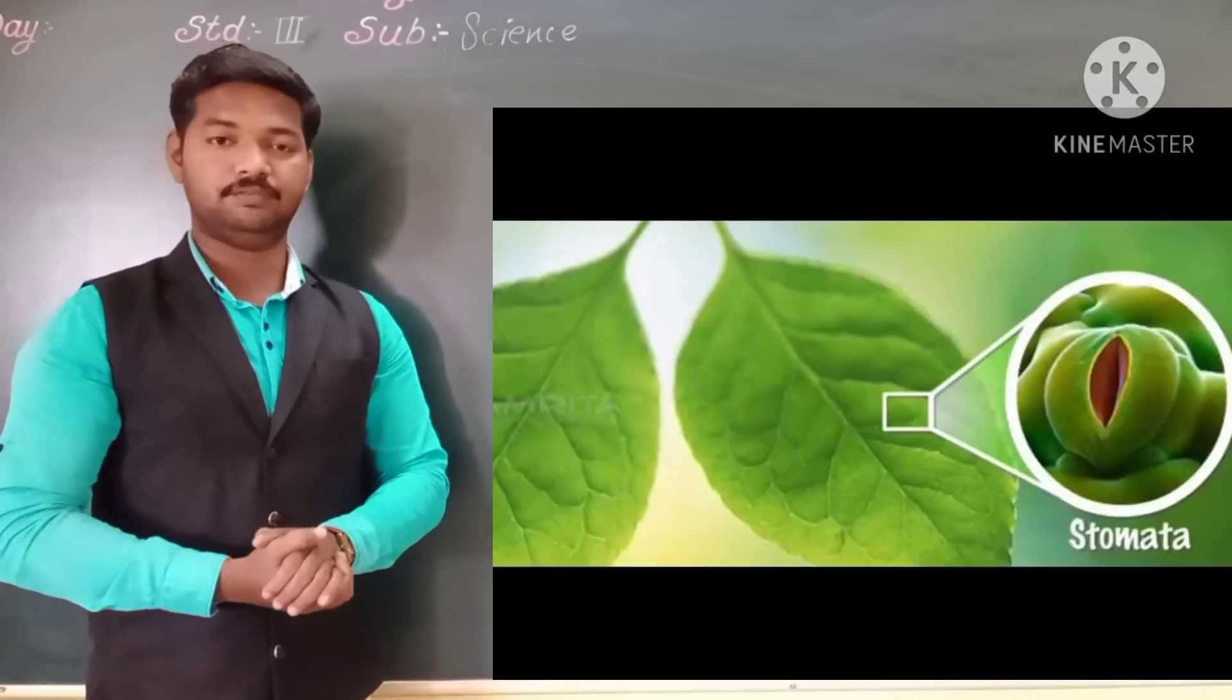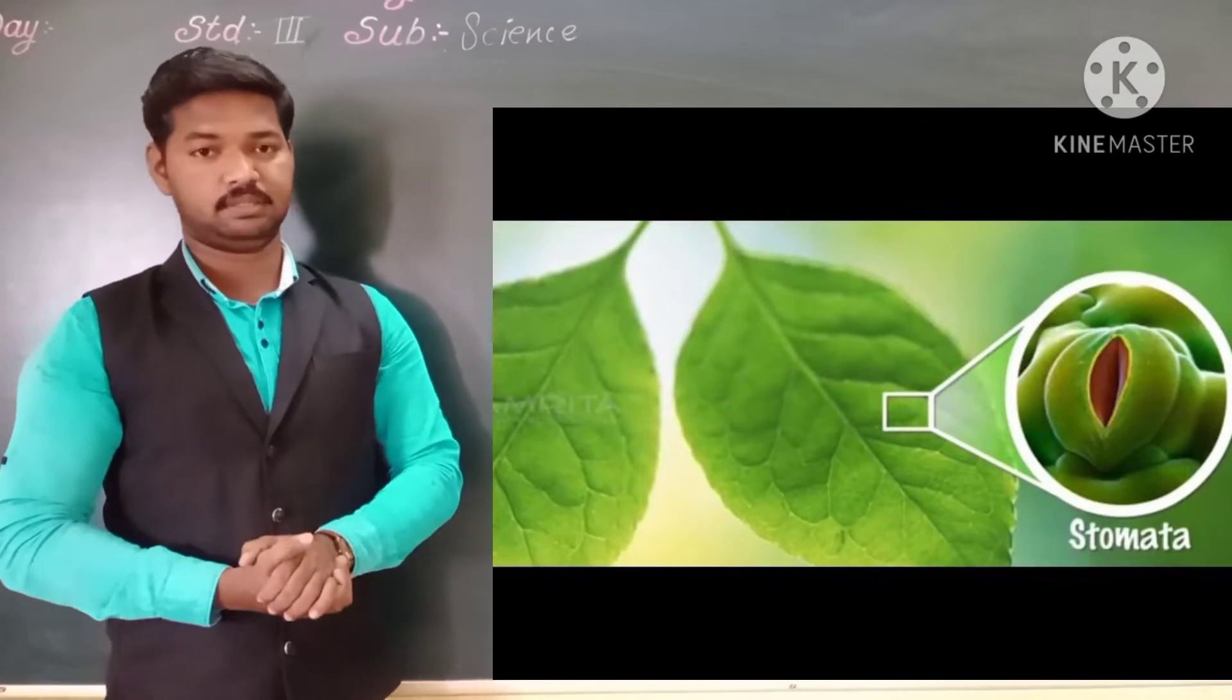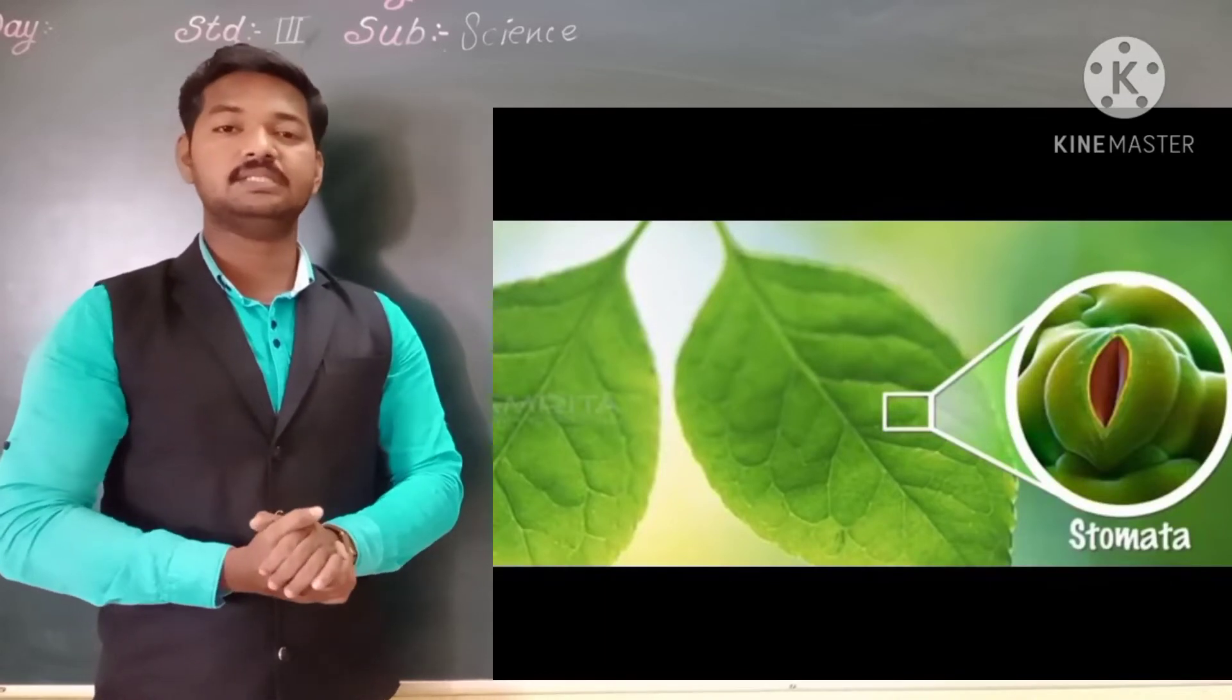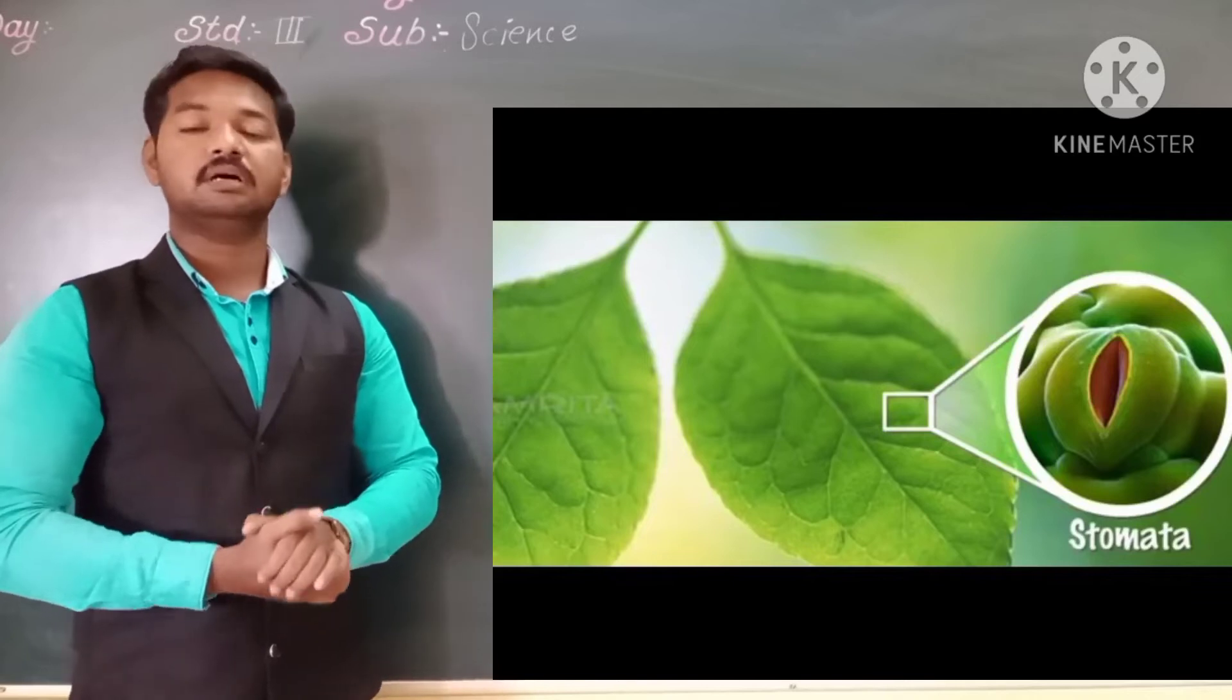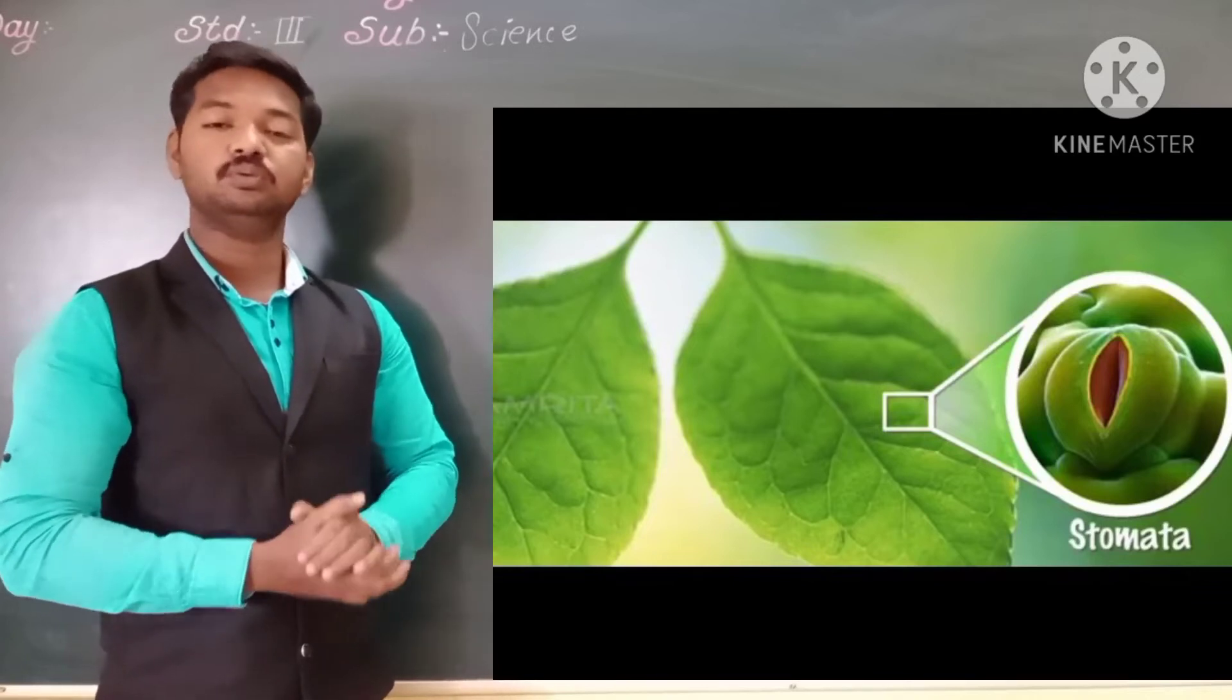The lower surface of the leaf has many holes. These holes are known as stomata. Plants breathe through stomata.